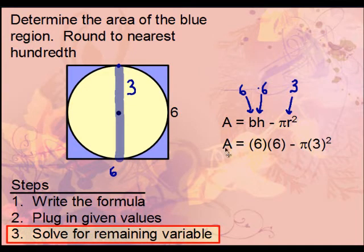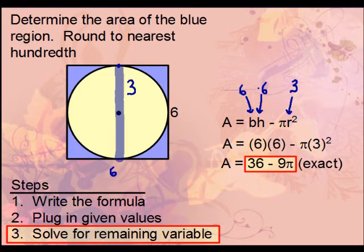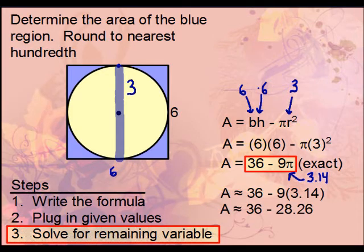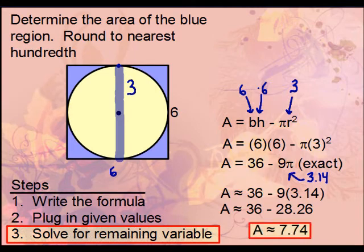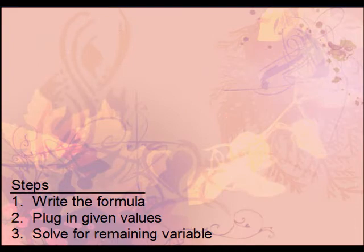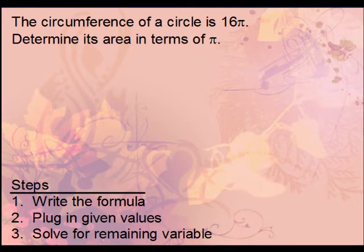Solving for the area: 6 times 6 is 36, and 3 squared is 9, giving us 36 − 9π as the exact answer. Substituting 3.14 for pi: 9 times 3.14 equals 28.26, and 36 minus 28.26 equals 7.74. That's the rounded approximation. Remember, once you replace pi with 3.14, the answer is no longer exact.